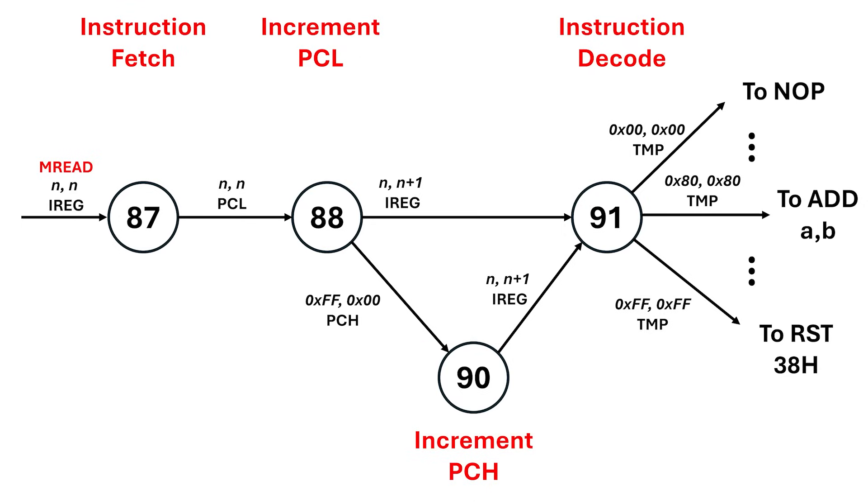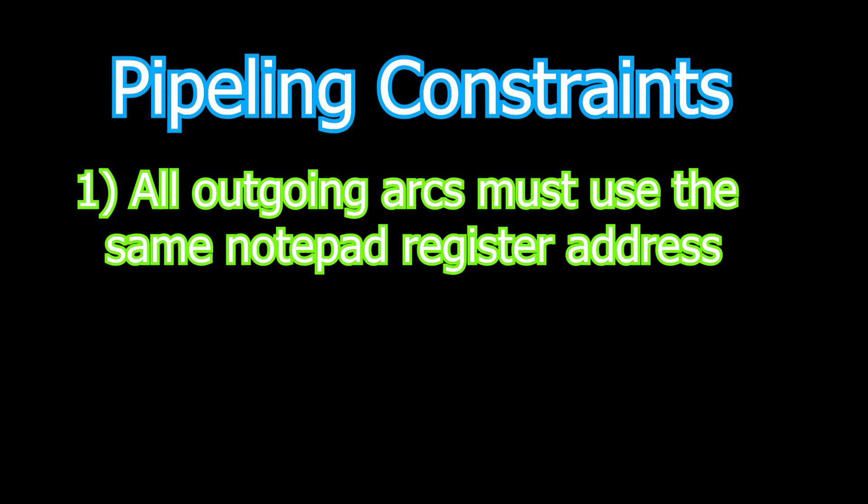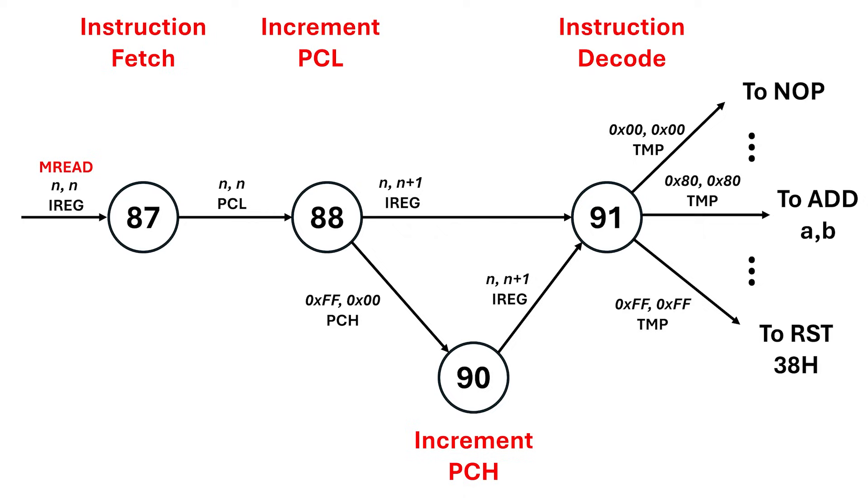But, here's where things get complicated. From state 88, where PCL is incremented, we typically move straight to state 91, where the instruction is decoded. That arc assumes we're using the instruction register for the next operation. But if we roll over at FF, we instead jump to state 90 and increment PCH, which is a completely different register. And, here's the twist. To make pipelining work, all outgoing arcs from a given state need to reference the same notepad register. If one arc tries to use the instruction register and another tries to use PCH, then I can't predict in advance what variable I need to read from the notepad.